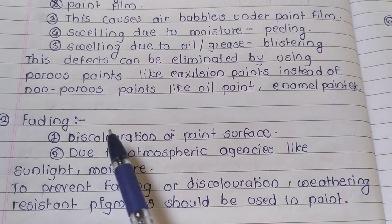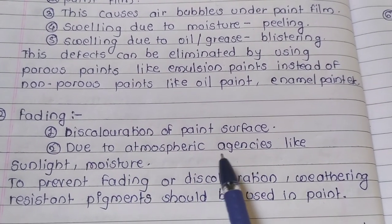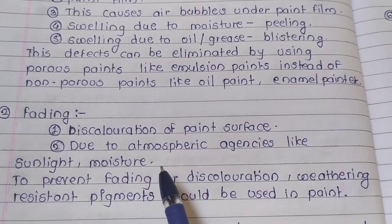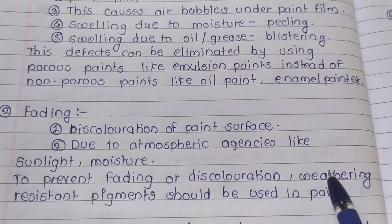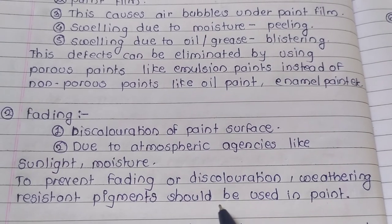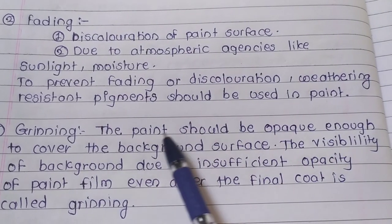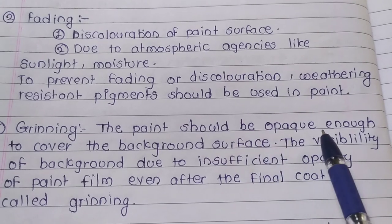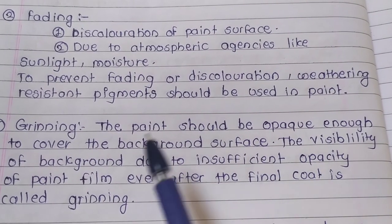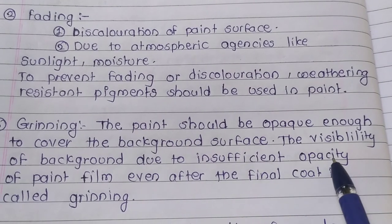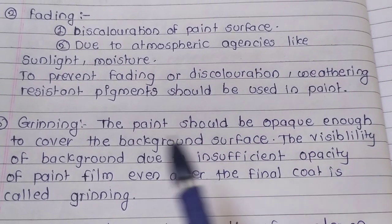Feathering is the discoloration of paint due to atmospheric agencies like sunlight and moisture. To prevent feathering or discoloration, weathering-resistant pigments should be used in paint. Greening: the paint should be opaque enough to cover the background surface. The visibility of the background due to insufficient opacity of the paint film, even after the final coat, is called greening.